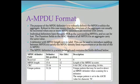Facts of AMPDU are as follows. The purpose of MPDU delimiter is to robustly delimit the MPDUs within the aggregate. Robust in this case means that the structure of the aggregate can usually be recovered when one or more MPDU delimiters are received with errors. Individual delimiters have the same BER as the surrounding MPDUs and so can be lost. The duration fields in the MAC header of all MPDUs in an aggregate carry the same value.